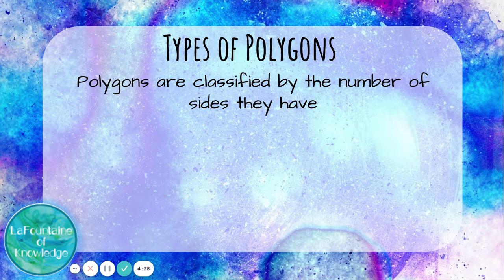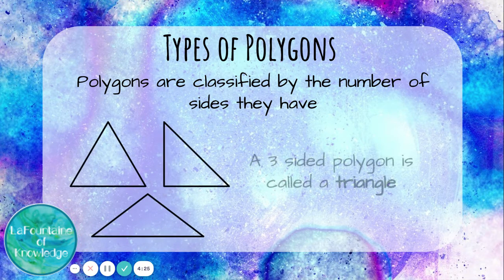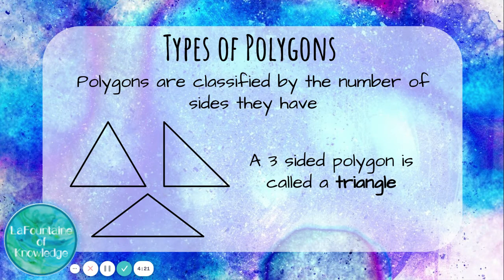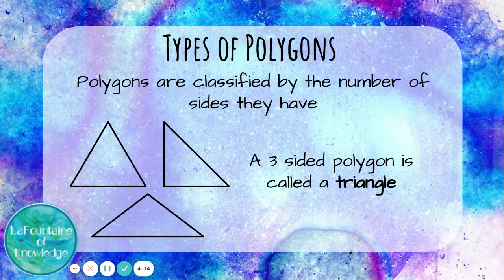Polygons are classified by the number of sides they have. A three-sided polygon is called a triangle. There are several different types of triangles, like acute triangles and equilateral triangles, but all triangles are three-sided polygons.